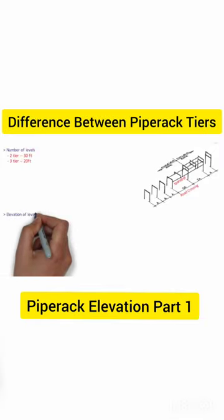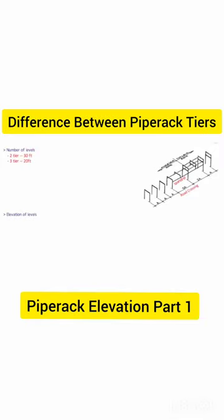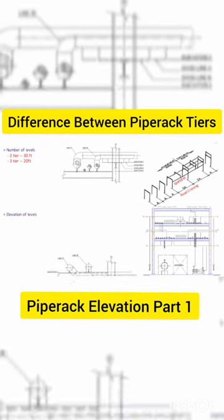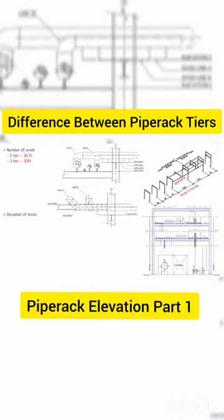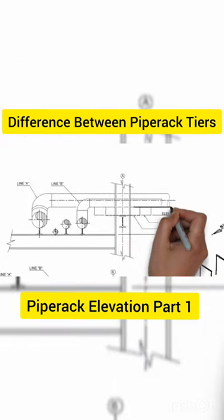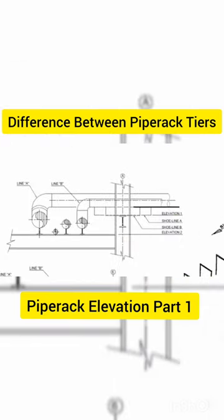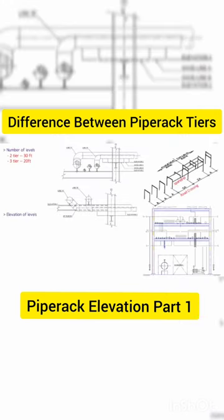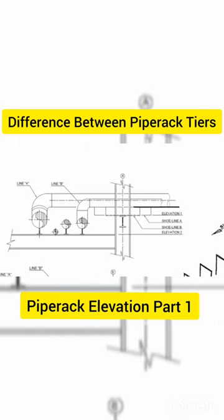First, we will see the gap between the tiers. It shall be decided on the basis of the largest diameter pipeline and its branching. The difference between the bottom line of pipe in the rack and the bottom of branch as it leaves the rack shall be decided carefully to avoid any interference due to support, insulation, size of branch, etc.